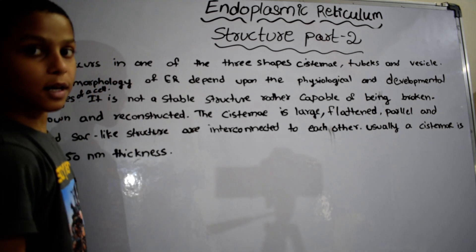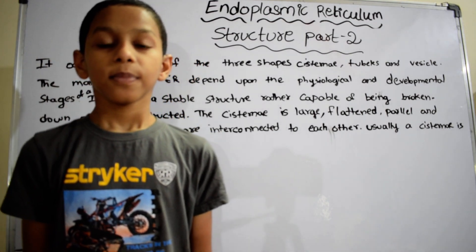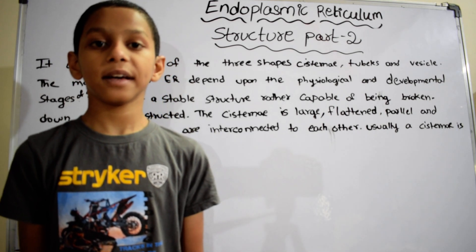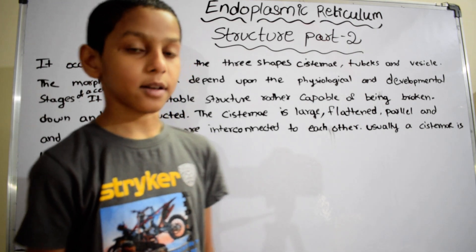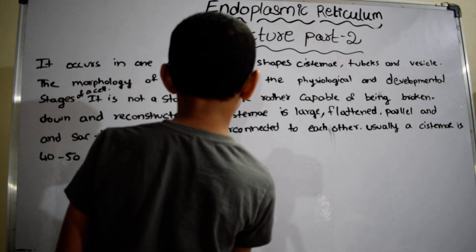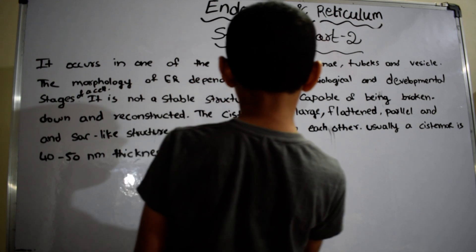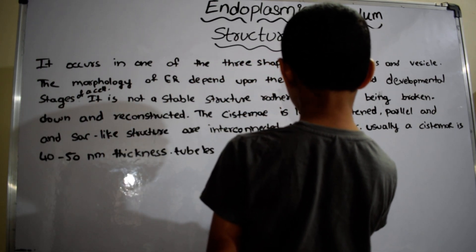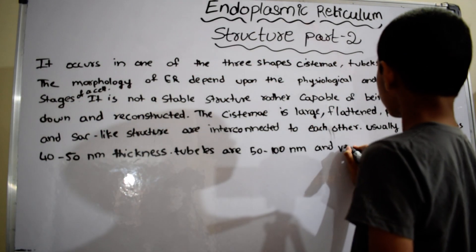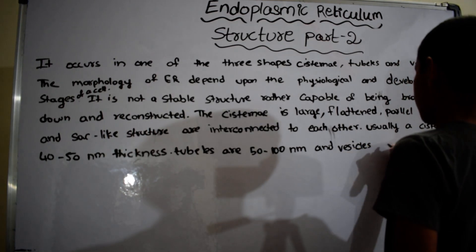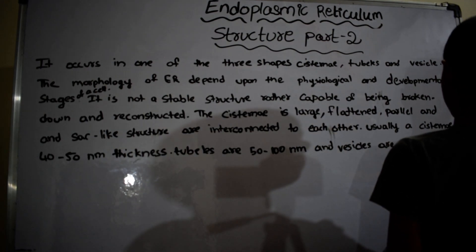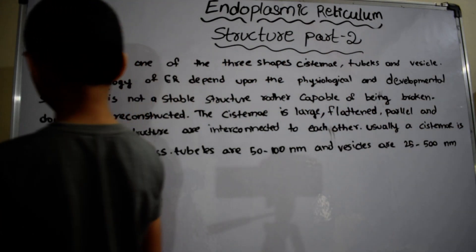Tubules are 50 to 100 nm and vesicles are 25 to 500 nm in diameter.